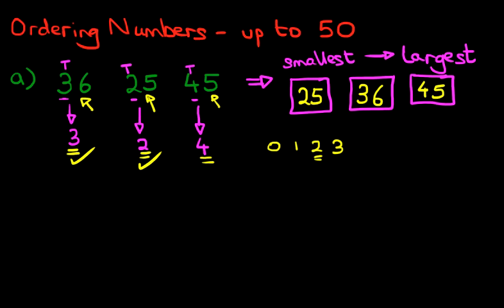So the question was: can you order the numbers from the smallest to the largest? We had 36, 25, and 45. All we did was look at the tens, and from that we worked out that the smallest number was 25, the next one was 36, and the largest was 45. How easy was that? That was very easy.